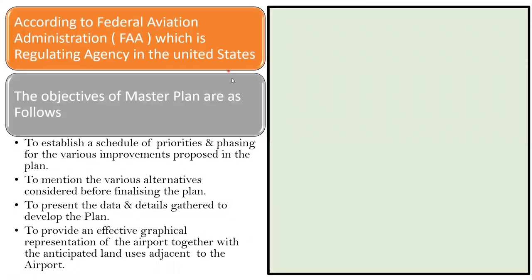According to the FAA — that stands for Federal Aviation Administration, which is the regulating agency in the United States — there are certain objectives of a master plan. These objectives are: to establish a schedule of priorities and phasing for the various improvements proposed in the plan; to mention the various alternatives considered before finalizing the plan; to present the data and details gathered to develop the plan; and to provide an effective graphical representation of the airport together with the anticipated land uses adjacent to the airport.